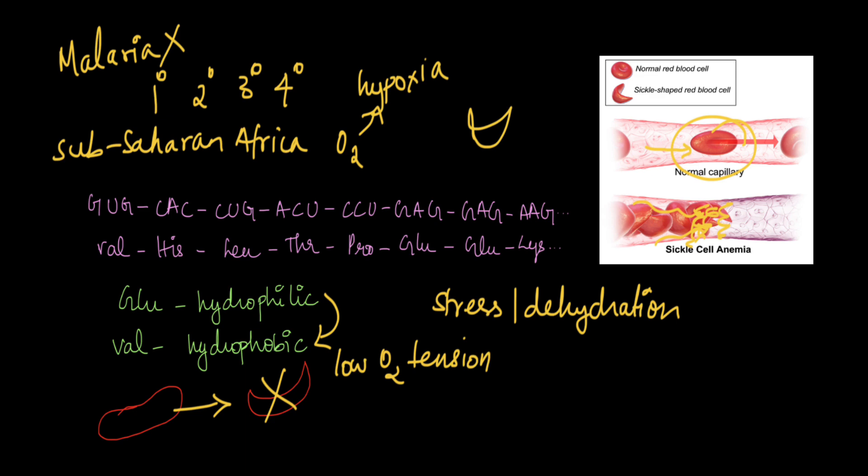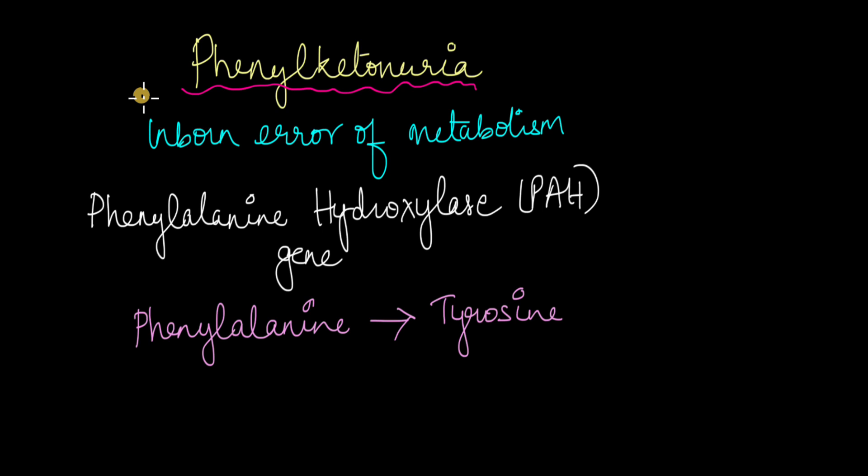Phenylketonuria belongs to a list of disorders known as inborn errors of metabolism. These inborn errors of metabolism have to do with malfunctioning enzymes. The enzyme that is involved in this disease is known as phenylalanine hydroxylase or PAH. This mutation that causes phenylketonuria is found in the gene that encodes for PAH, which is found on chromosome number 12.